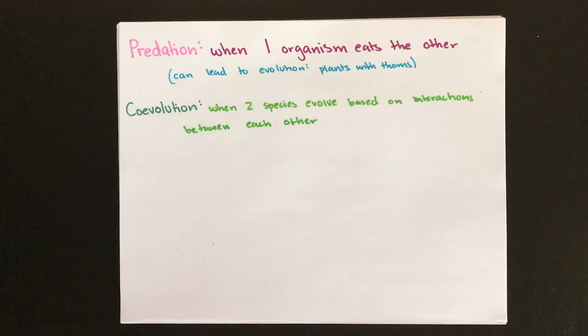Predators present in the environment can affect your carrying capacity. If you have more predators, it's very unlikely that you'll have an extreme amount of prey surviving in the environment.